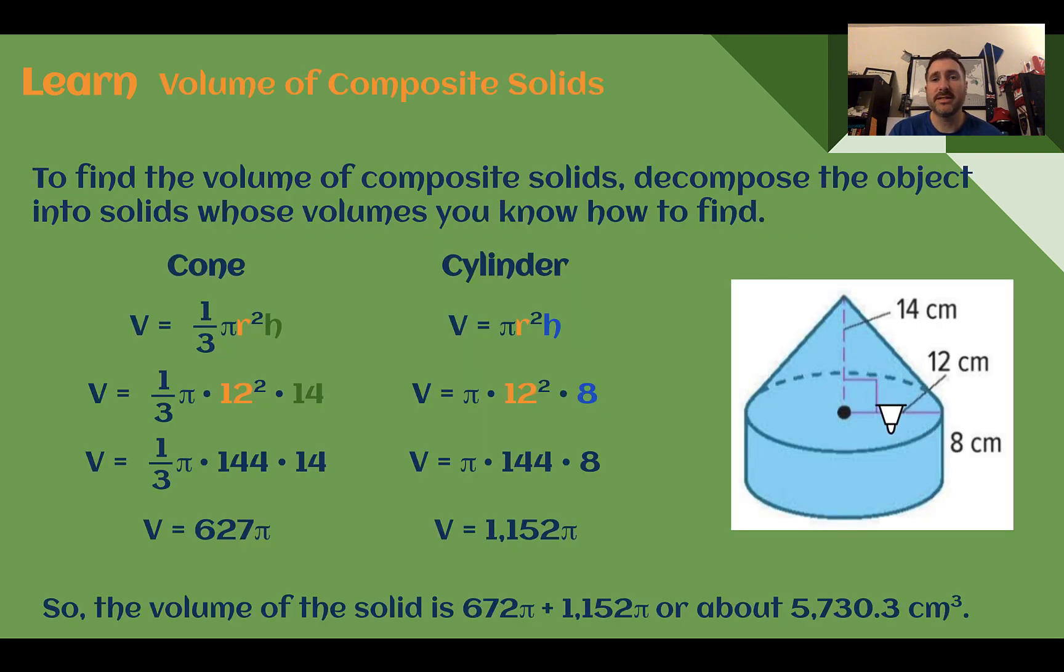To find the volume of these composite solids, we're going to decompose the object or break it apart into solids whose volumes we know how to find. So given this picture here, we have a cone on top of a cylinder. We know how to find the volume of a cone, the volume of a cylinder. So to find the volume of this object, we would just find the volume of each of its parts and then add them together.